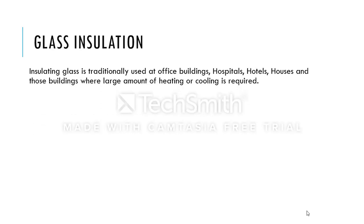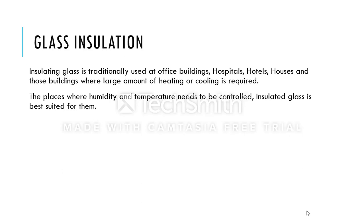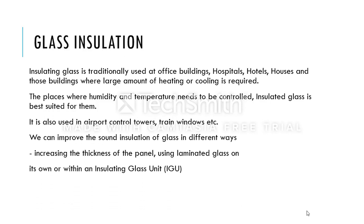Glass insulation is traditionally used in office buildings, hospitals, hotels, houses, and buildings where a large amount of heating or cooling is required — places where humidity and temperature need to be controlled. It is also used in airport control towers and train windows. We can improve the sound insulation of glass in different ways: by increasing the thickness of the panel, or using laminated glass on its own or within an insulating glass unit, known as an IGU.